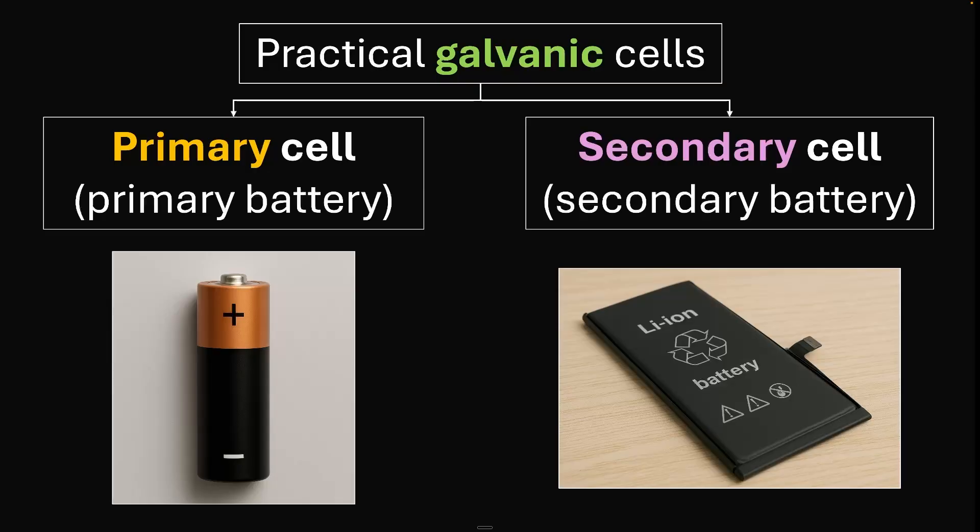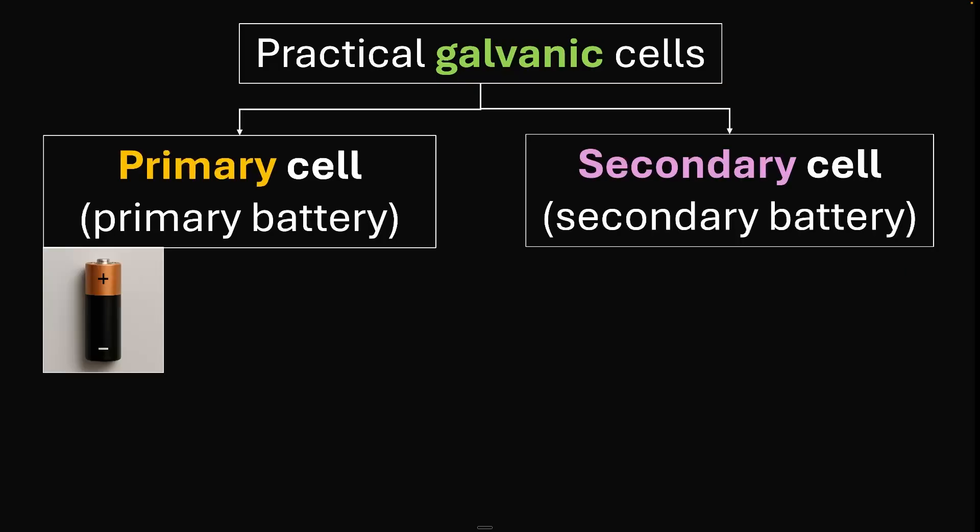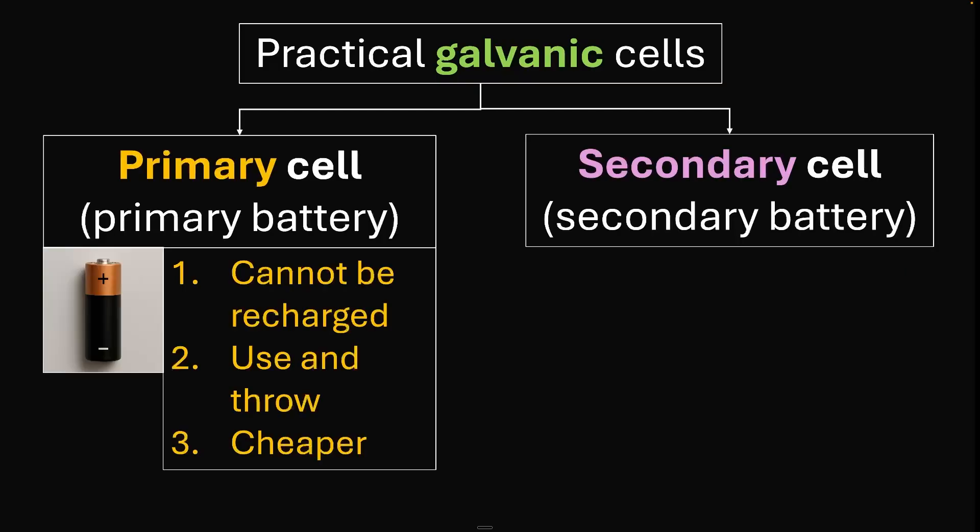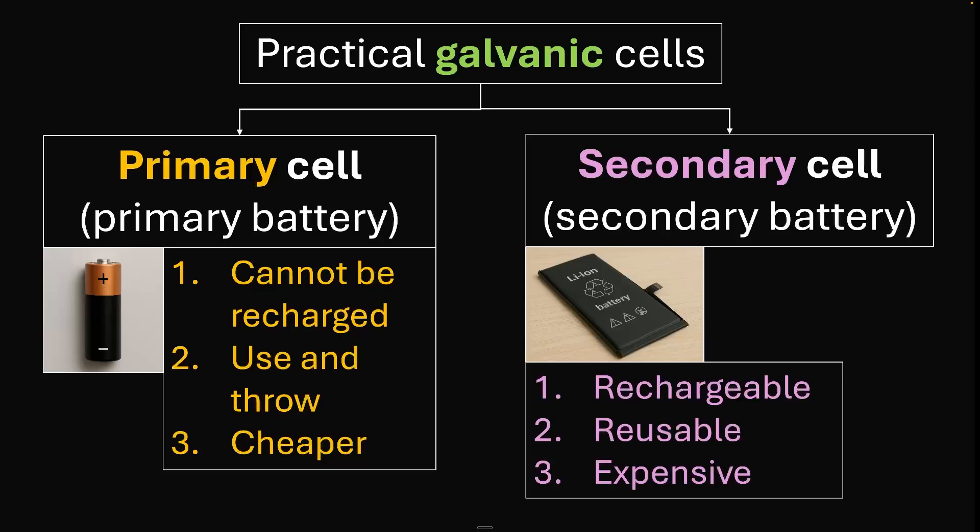I'm sure you're getting the difference. The primary batteries cannot be recharged. You use them once and throw them away, and they're typically cheaper. The secondary types are in your cell phones, cars, and laptops, which are rechargeable. You can recharge them again and again, but they tend to be more expensive.